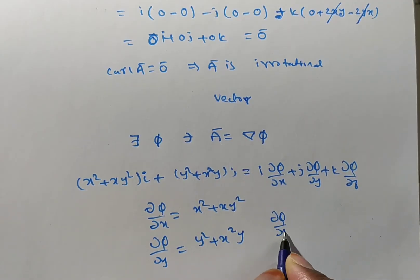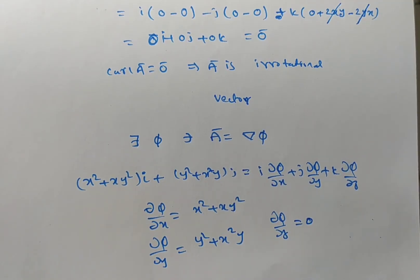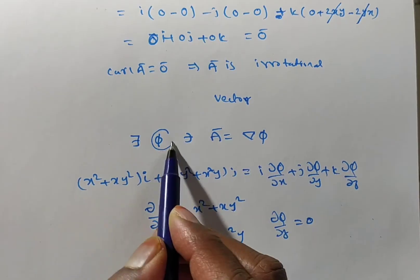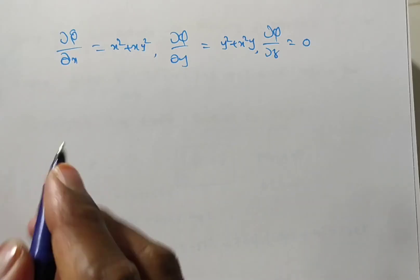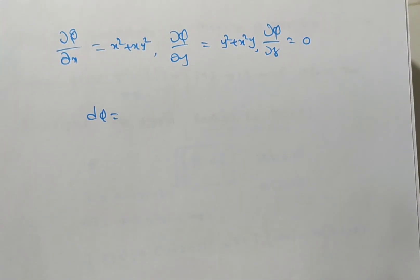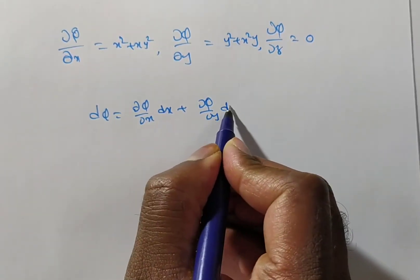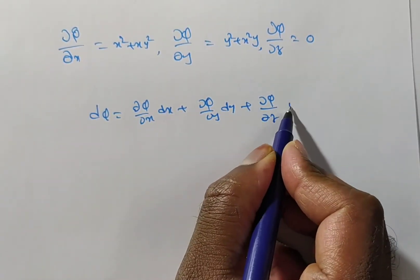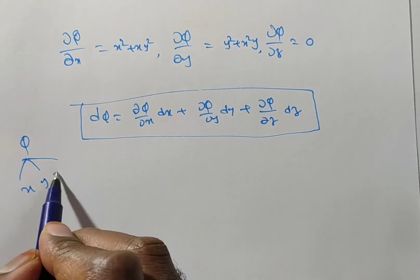We need to find the scalar potential function φ. We know the partial derivatives ∂φ/∂x, ∂φ/∂y, and ∂φ/∂z. From total differentiation, when φ is a function of x, y, z: dφ = (∂φ/∂x)dx + (∂φ/∂y)dy + (∂φ/∂z)dz.